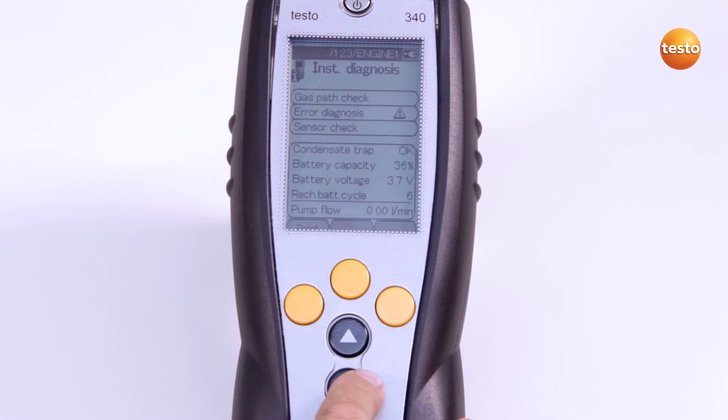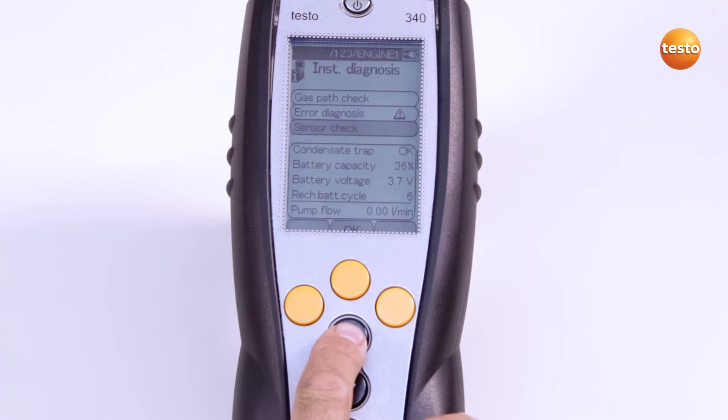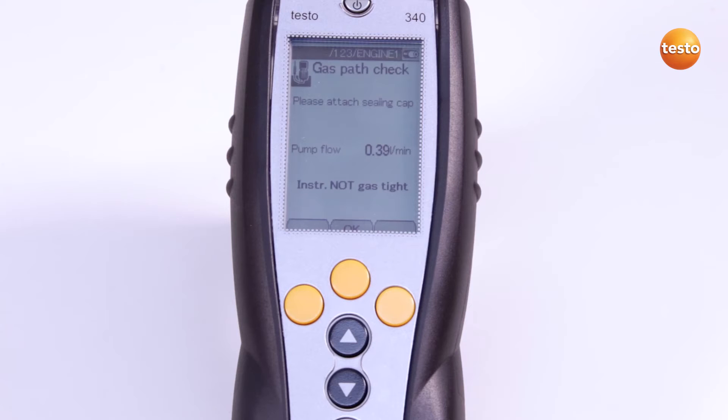Then in the main menu, I select the sub-menu Instrument Diagnosis and then Gas Path Check. The pump flow is shown on the display.